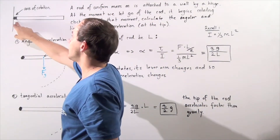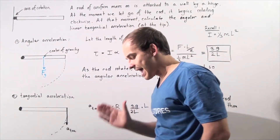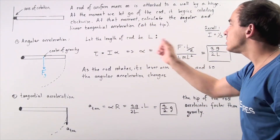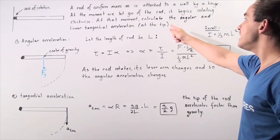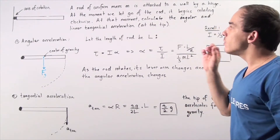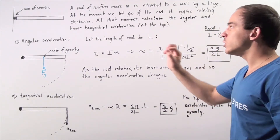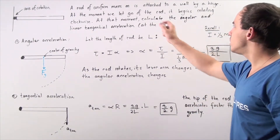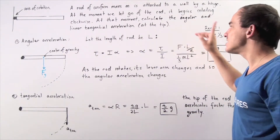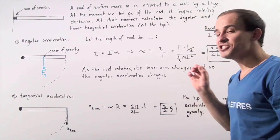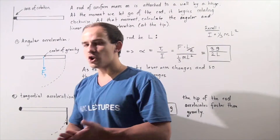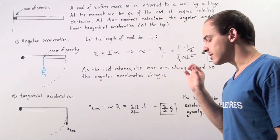If we let go of the rod, it will rotate about the hinge, which serves as the axis of rotation. At the moment we let go of the rod, it begins rotating in the clockwise direction. At that exact moment when we let go, we want to calculate two things: the angular acceleration of the rod, as well as the linear tangential acceleration at the tip of the rod. Let's begin with the angular acceleration.